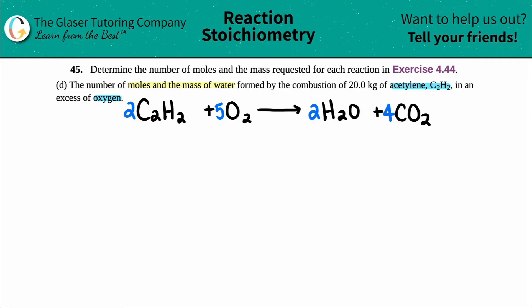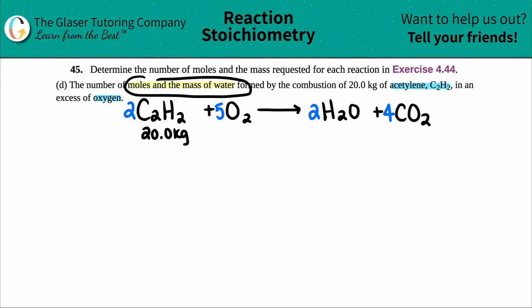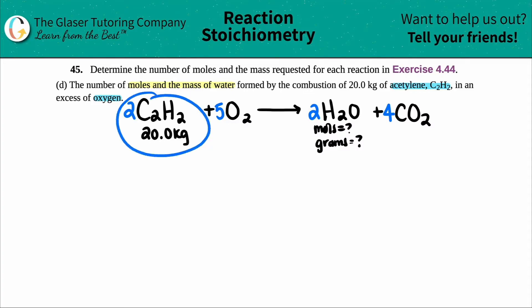Now I categorize what's going on. I put what I have under the compound it belongs to: 20.0 kilograms of acetylene goes under C₂H₂. They're asking for moles and mass of water formed, so under water I note I need moles and mass — and remember mass is in grams. This illustrates stoichiometry: I have a number for one compound and need information for another.